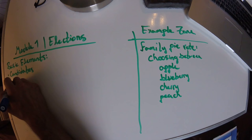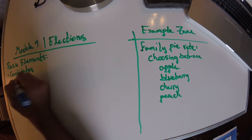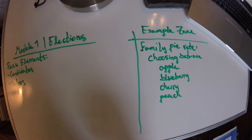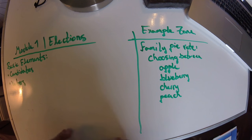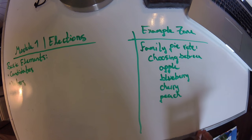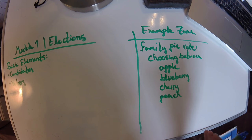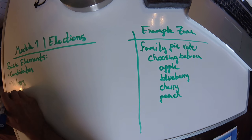Next we have the voters. These are the people who have a say in the outcome of the election. In this case, it's the family members, because all the family members are going to vote on which pie they're going to have.